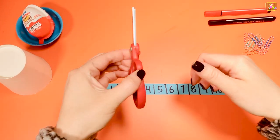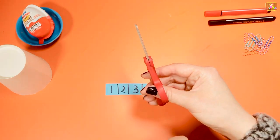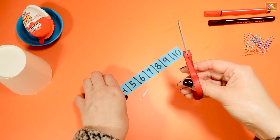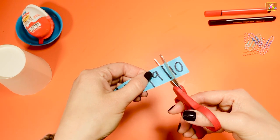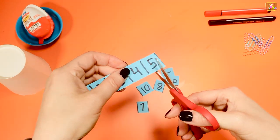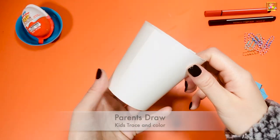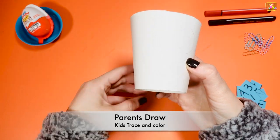Let's put the thumb in the small hole and the rest of the fingers go in the big hole. Keep your wrist straight and cut on the lines.